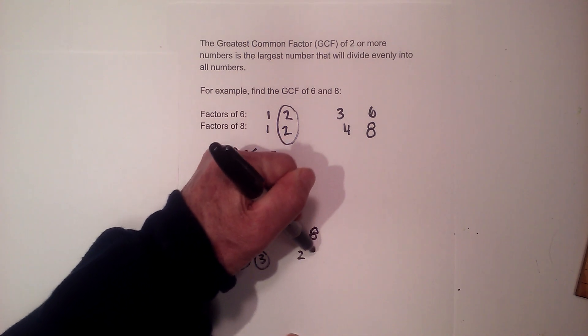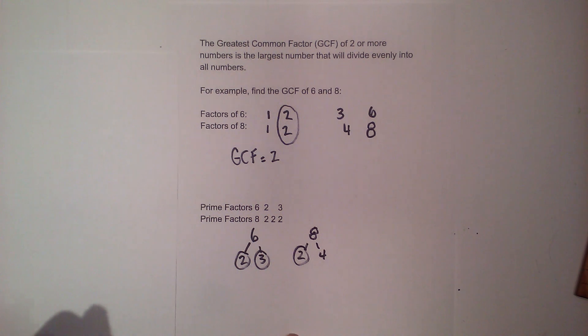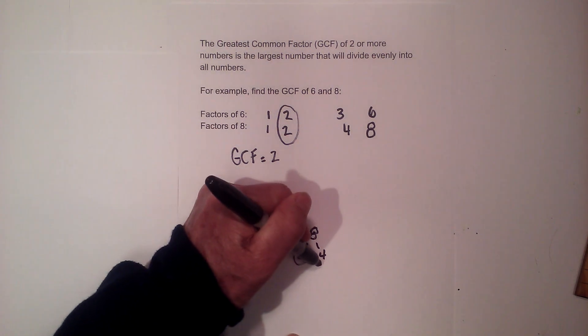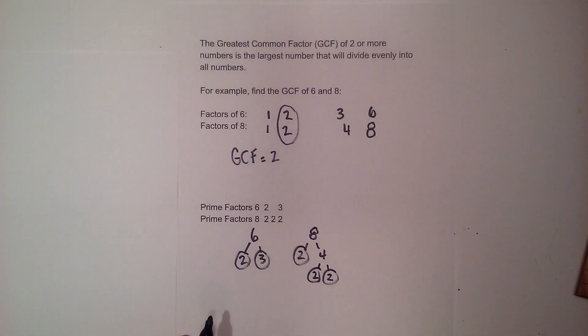For 8, 2 goes into 8 four times. You don't have to use 2 every time but it goes into a lot of numbers. And now 2 goes into 4 two times. So circle both 2's so I have all the prime numbers.